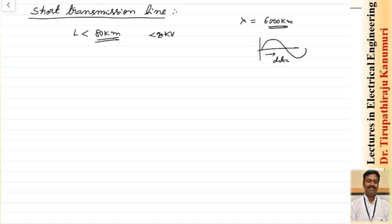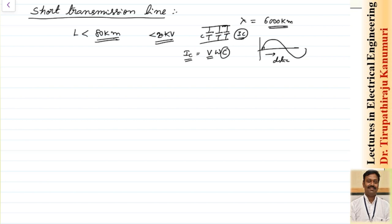If the length is up to 80 kilometers, the effect and variation is very less, so the parameters can be taken as lumped parameters. Also, because the distance and voltage are less, the effect of the capacitive current — which is V times omega C — is negligible. The total capacitance depends on distance, so we can neglect the capacitance entirely.